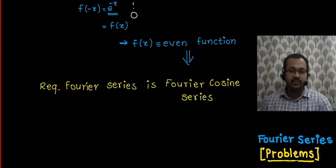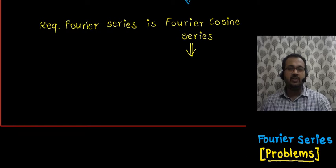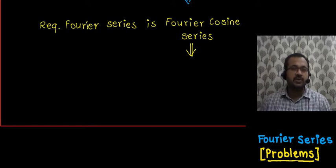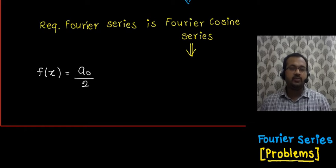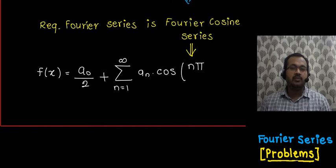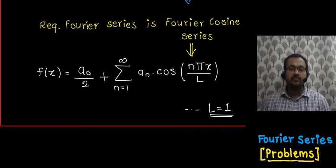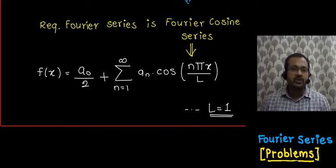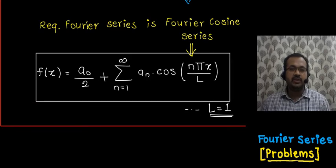Since it is a Fourier cosine series, the representation is: f(x) = a₀/2 plus the summation from n = 1 to infinity of aₙ times cos(nπx / l). In this case, the value of l is equal to 1, so we can substitute that later. This is the required Fourier series that we need to evaluate.